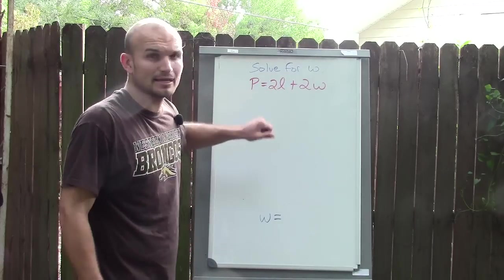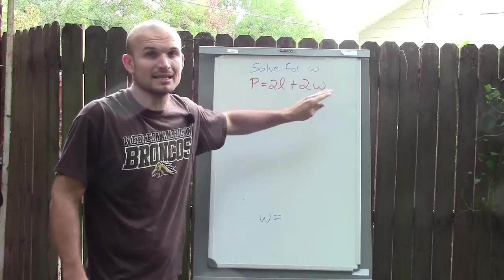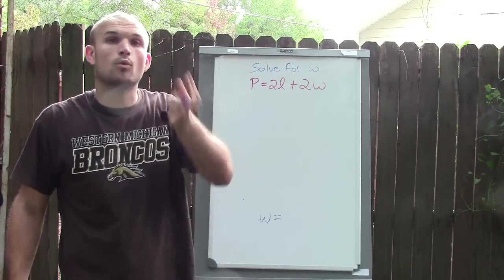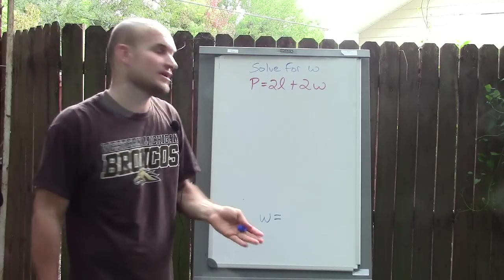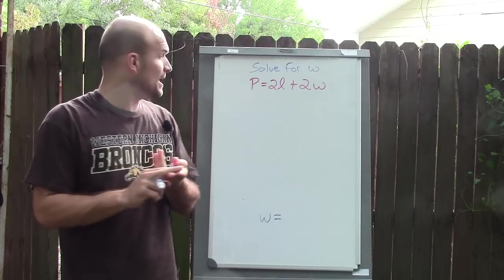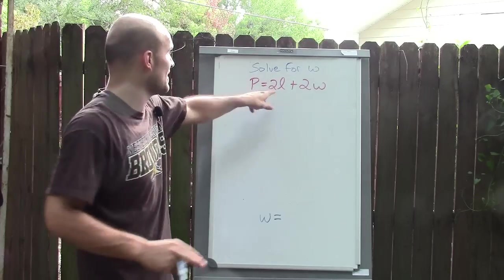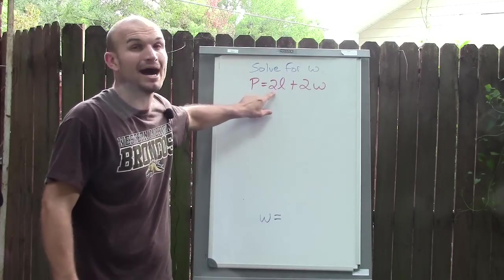The first thing I'm going to do is isolate W. I need to think about what two things are happening to my variable. Well, it's being multiplied by 2 and added by 2L. It's being added because that's a positive 2L.